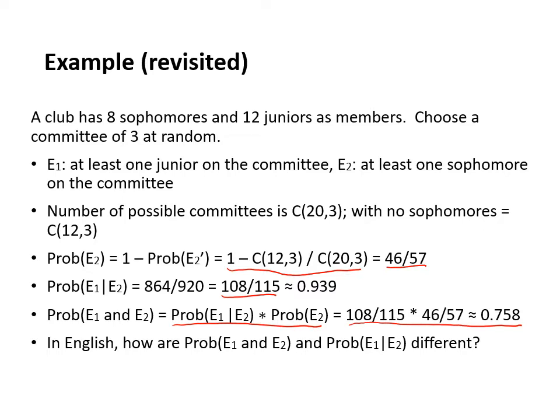We can now ask ourselves how the probability of e1 and e2 and the probability of e1 given e2 are different. Well, one tells us the probability of both of these events happening, and the other tells us the probability of e1 happening given that we know that e2 happened. That explains the difference between these two.